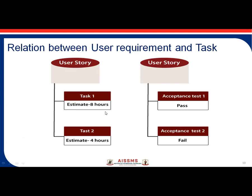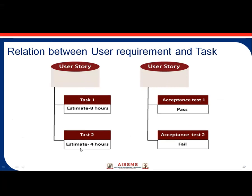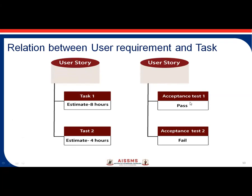Here is the relation between user requirement and task illustrated: a user story may have Task 1 estimated at 8 hours and Task 2 at 4 hours, along with multiple acceptance phases. For example, if acceptance phase 1 passes but acceptance phase 2 fails, we cannot deploy the product to the end user — we must go through the sprint cycle again, do rigorous checking, make modifications, and re-run acceptance phases 1 and 2 until all phases pass.